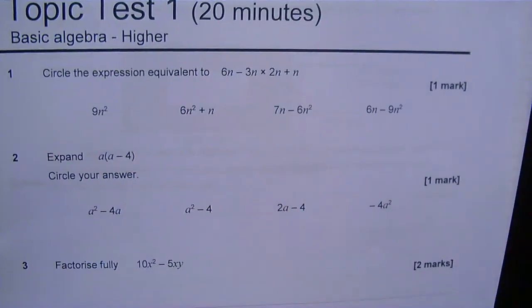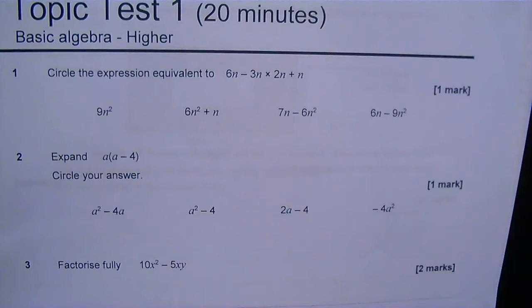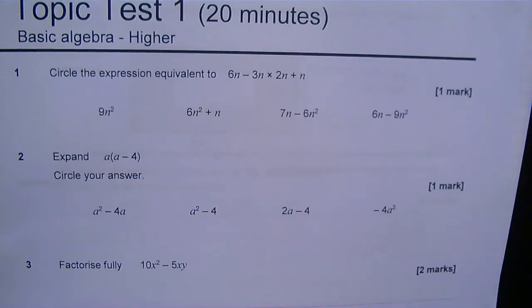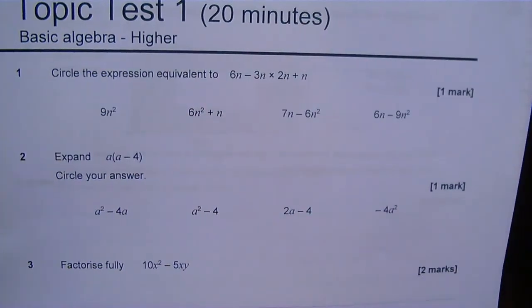Hello, welcome to the AQA topic test basic algebra higher. Question 1: Circle the expression that is equivalent to 6n minus 3n times 2n plus n.